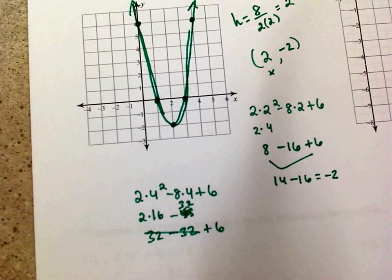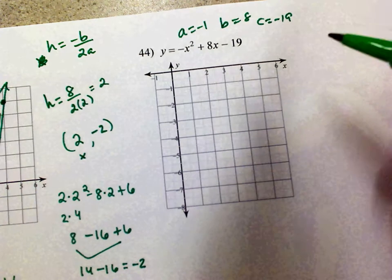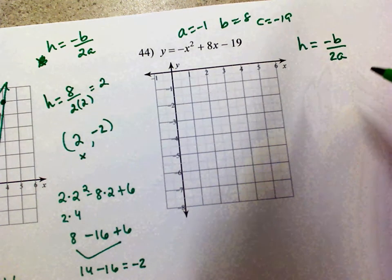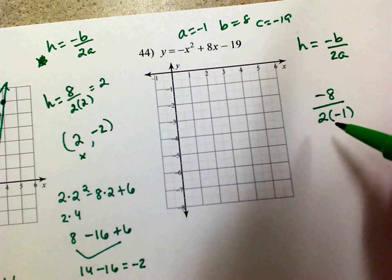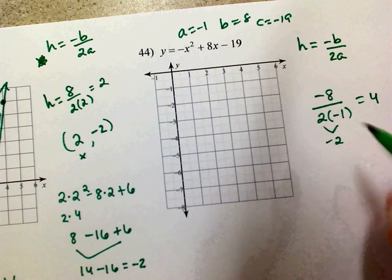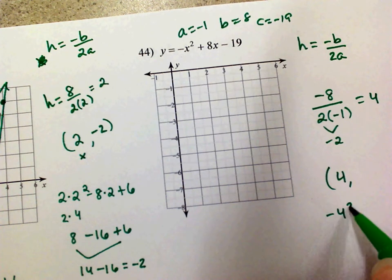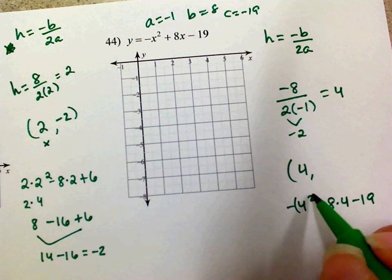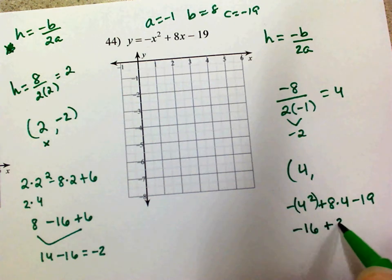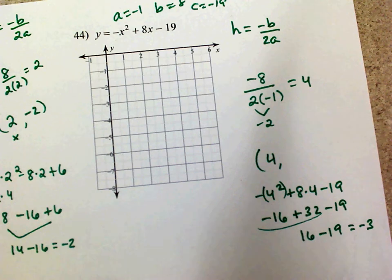Let's do it one more time. For this problem: a is negative 1, b is 8, c is negative 19. Finding the vertex: h is negative b over 2a, so negative 8 over 2 times (negative 1) equals negative 8 over negative 2, which is positive 4. My vertex is at x equals 4. Plugging in to find y: negative (4 squared) plus 8 times 4 minus 19. The negative is not part of the 4 — it's negative (16) plus 32 minus 19. 32 minus 16 is 16, and 16 minus 19 is negative 3. So my vertex is (4, negative 3).